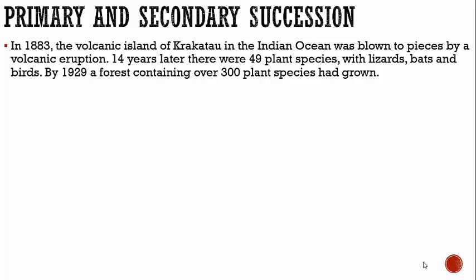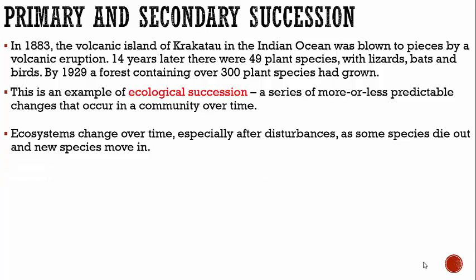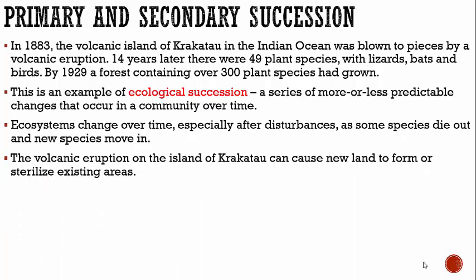So we have this island that's literally blown to pieces. All life is destroyed, but it bounces back. This is an example of what is called ecological succession — a series of more or less predictable changes that occur in a community over time. Ecosystems change over time, especially after disturbances like an island being blown to pieces by a volcanic eruption. As some species die out, new species move in.